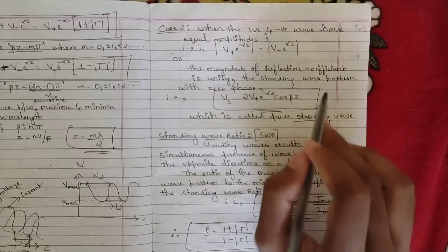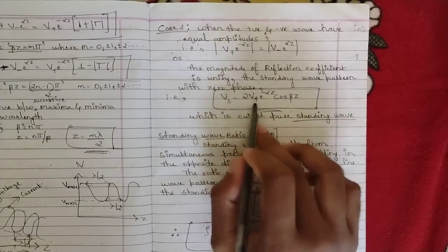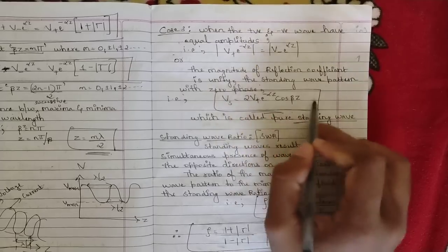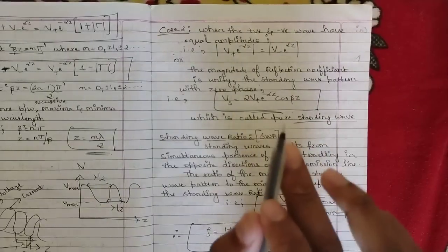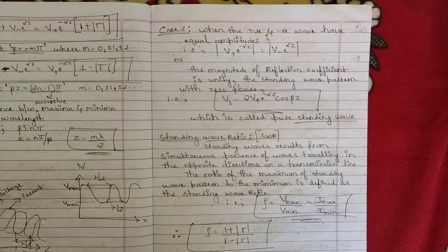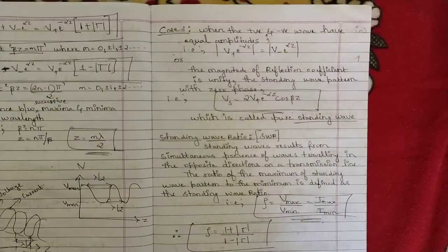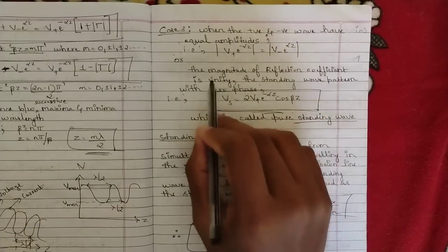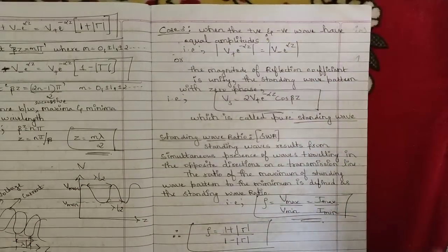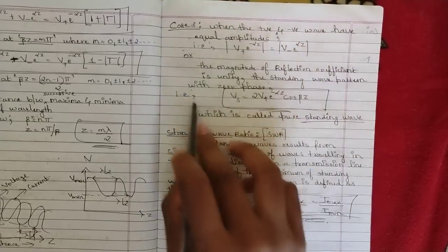The standing wave pattern with zero phase in this case gives the final equation for a pure standing wave: V_s equals 2 times V-plus times e to the power minus alpha-z times cos-beta-z. It is two times because since the positive and negative components are equal, adding them gives twice the value. This is the pure standing wave in which both positive and negative waves have equal amplitudes traveling in a particular period. In that case the reflection coefficient is unity and whenever the positive and negative amplitudes are equal, the wave is called a pure standing wave — very important to note.